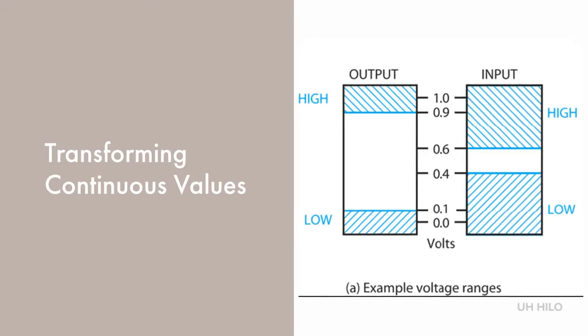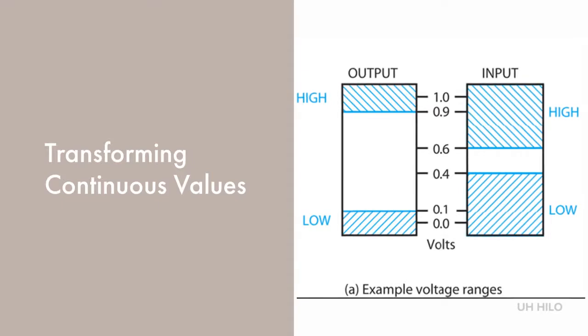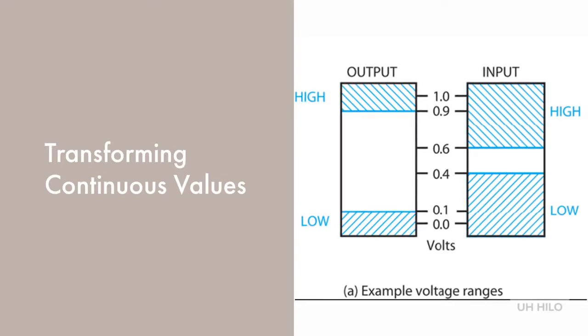We typically do this by having ranges that correspond to high and low. In this figure, the high output ranges from 0.9 to 1.1 and low output ranges from minus 0.1 to 0.1. The high input range allows for 0.6 to 1.1 as high and minus 0.1 to 0.4 to be recognized as low.